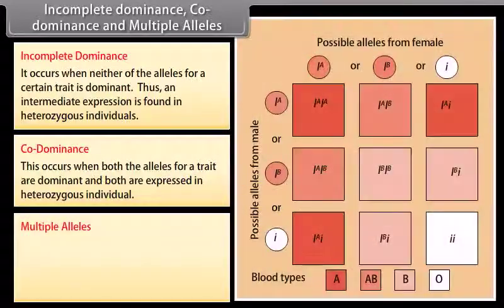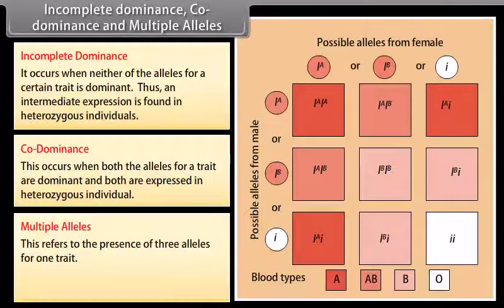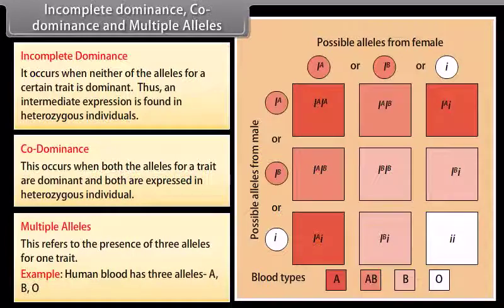Multiple alleles. This refers to the presence of three alleles for one trait. Example: Human blood has three alleles A, B, and O.